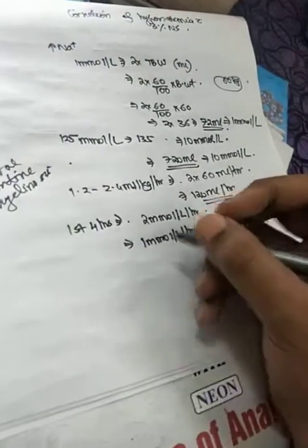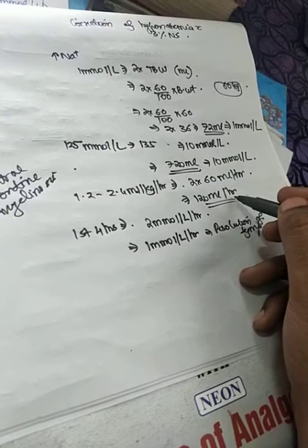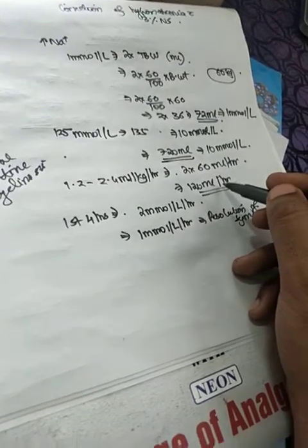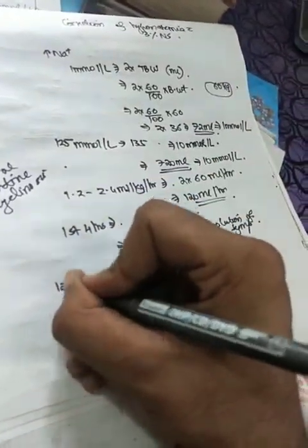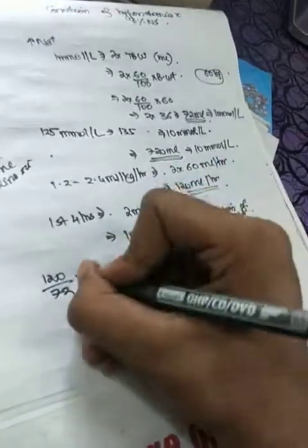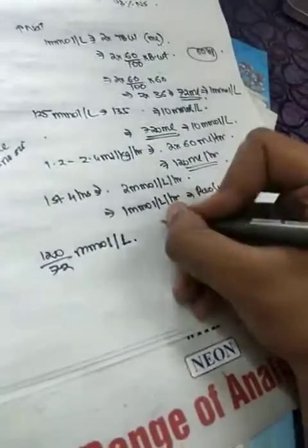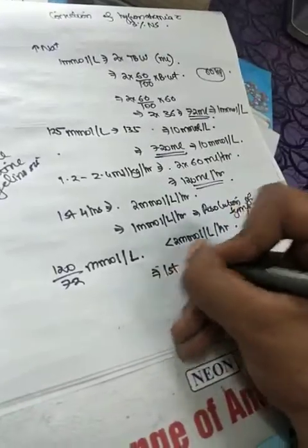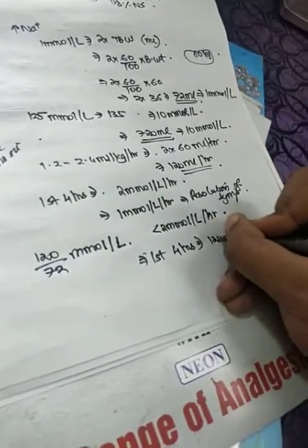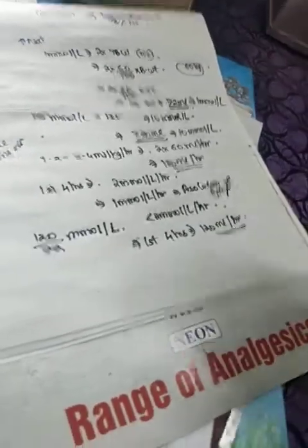So if you are giving 120 ml per hour, this will increase the serum sodium by 120 by 72 millimole per liter. That is, it is anyway less than 2 millimole per liter per hour, so there is no problem. We can infuse for the first four hours at 120 ml per hour rate.